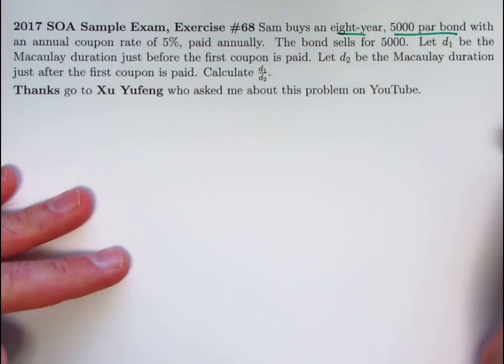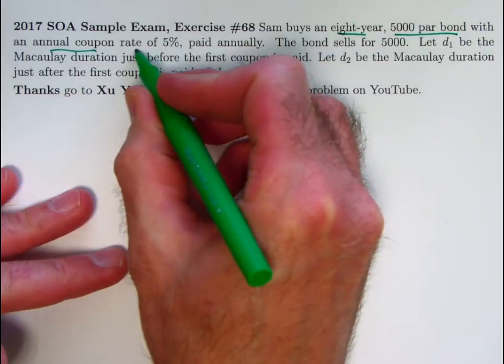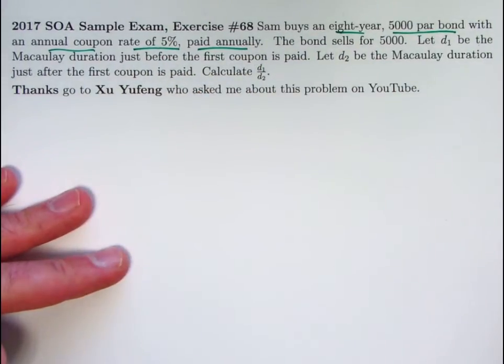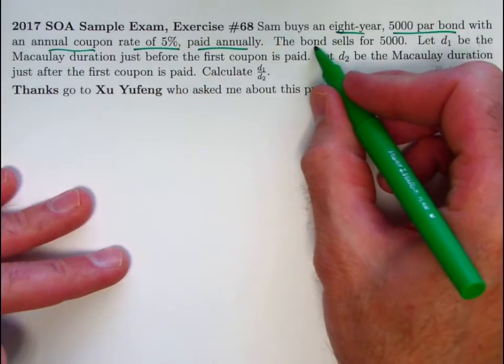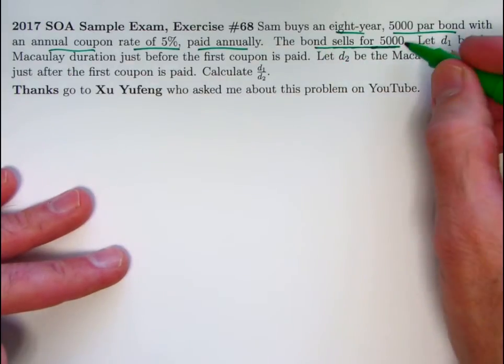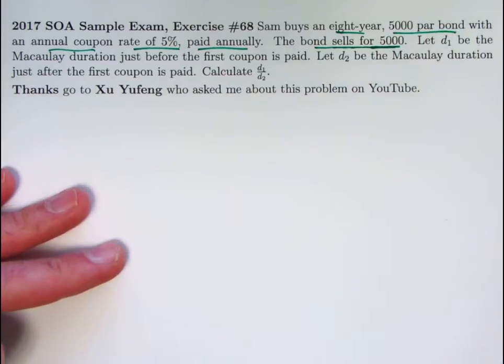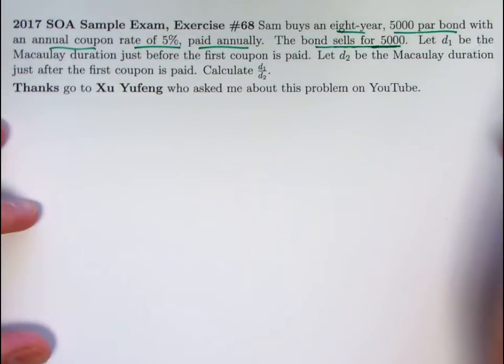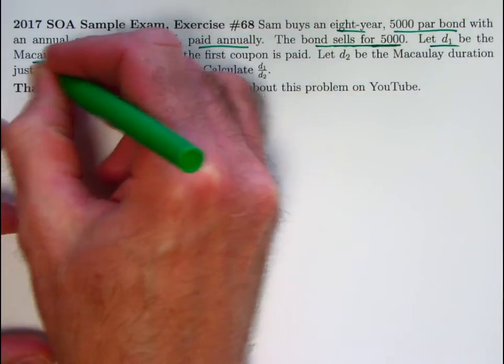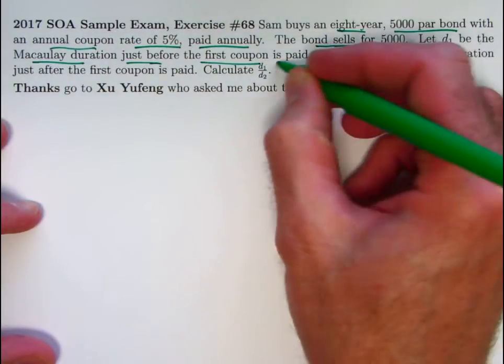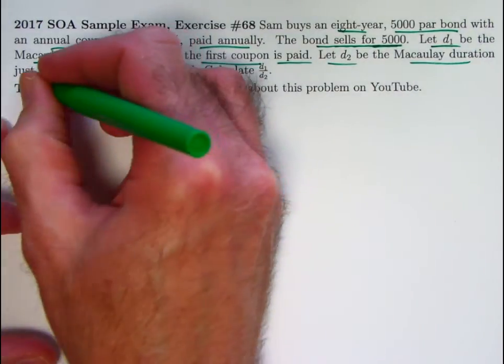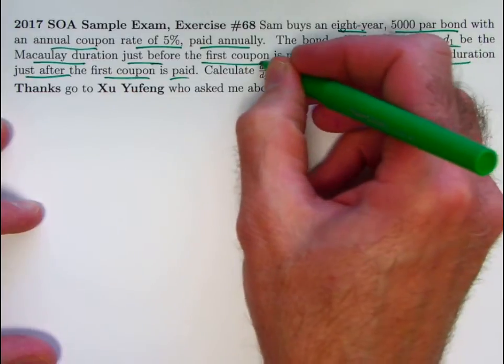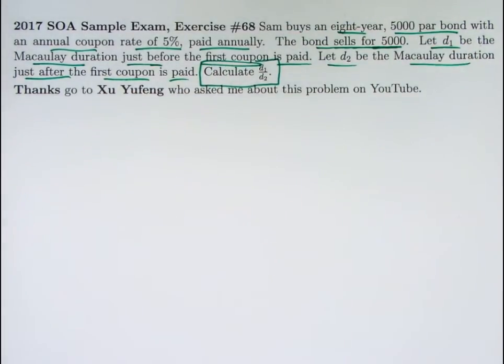And I went ahead and looked at it and thought it was a really cool problem. So we have a person, Sam, buying an eight-year 5,000 par bond with annual coupon rate of 5% paid annually. The bond, here's an important point, the bond sells for 5,000. It's selling for the par value and evidently it's also redeemed at the par value. That's important. That means the coupon rate and the yield rate are the same. And it means the price after any individual coupon is paid is going to be also 5,000. That's important for solving this problem. Let D1 be the Macaulay duration just before the first coupon is paid, and let D2 be the Macaulay duration just after the first coupon is paid. The goal here is to calculate the ratio D1 divided by D2.